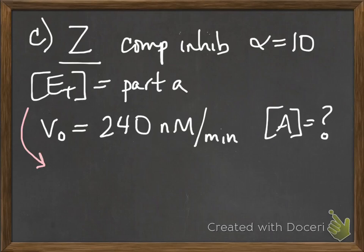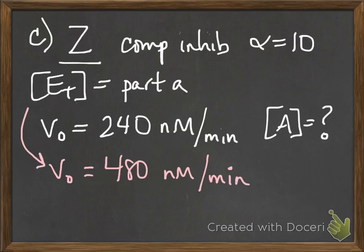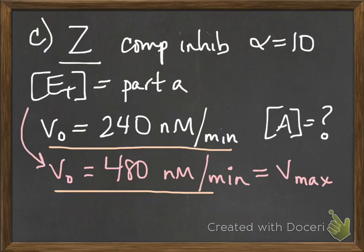In part A you used a certain amount of enzyme which you solved to be 24 nanomolar. The initial velocity from part A was 480 nanomolar per minute. And remember, you realized through the course of the problem that this measurement that you made was actually Vmax.